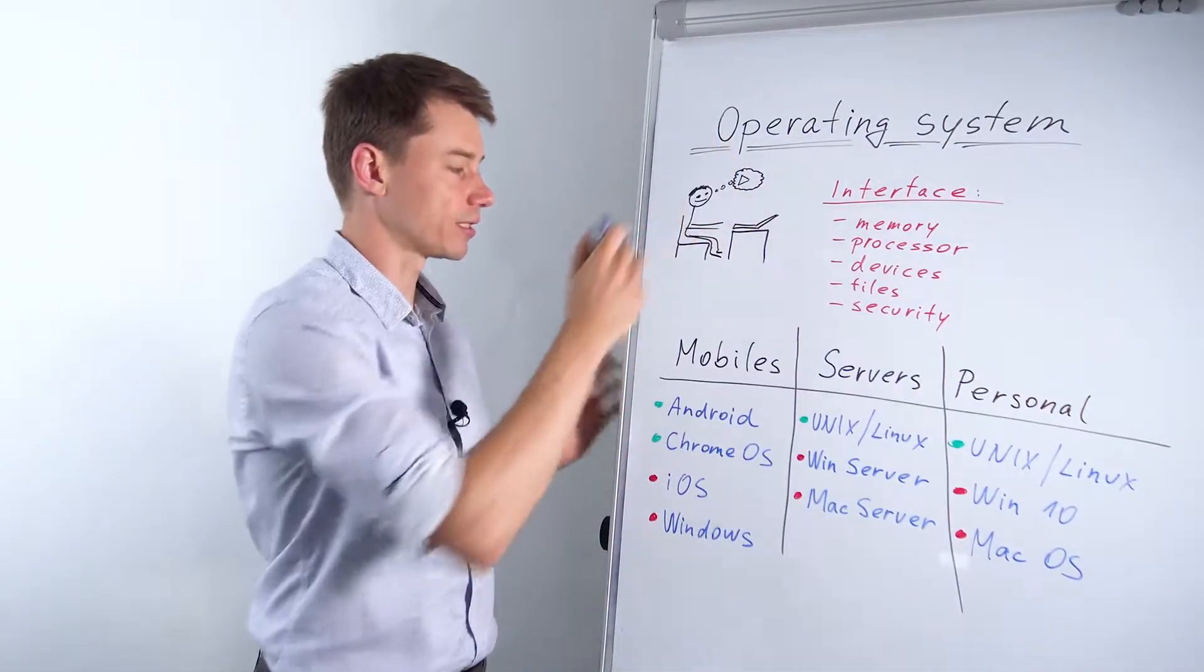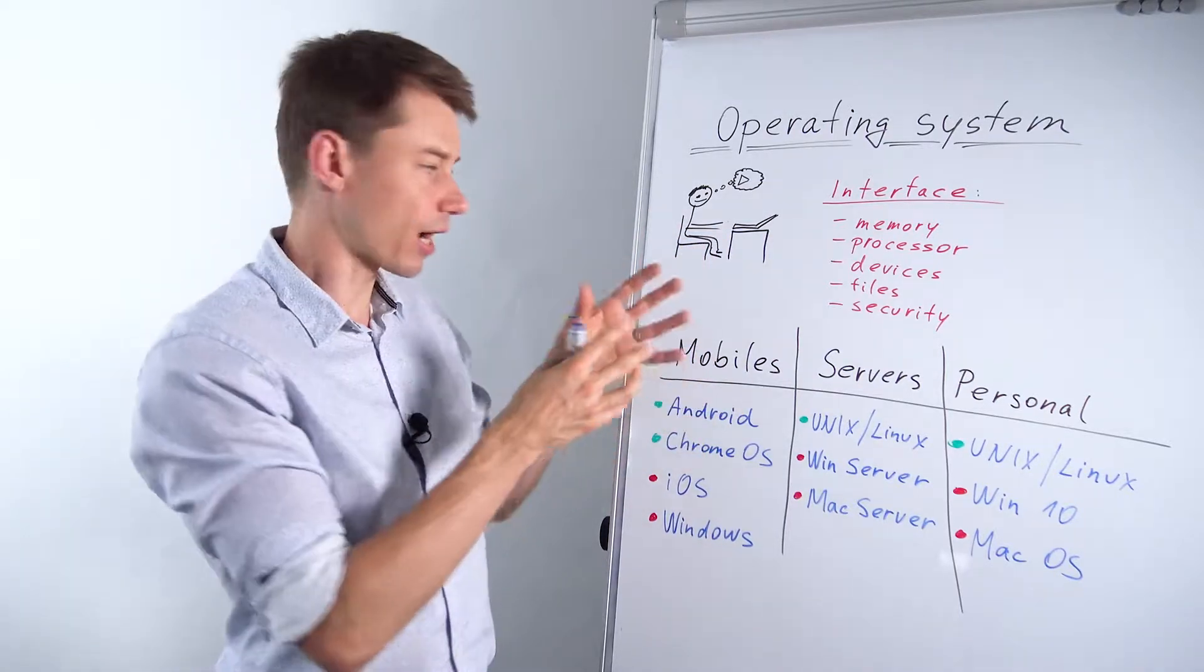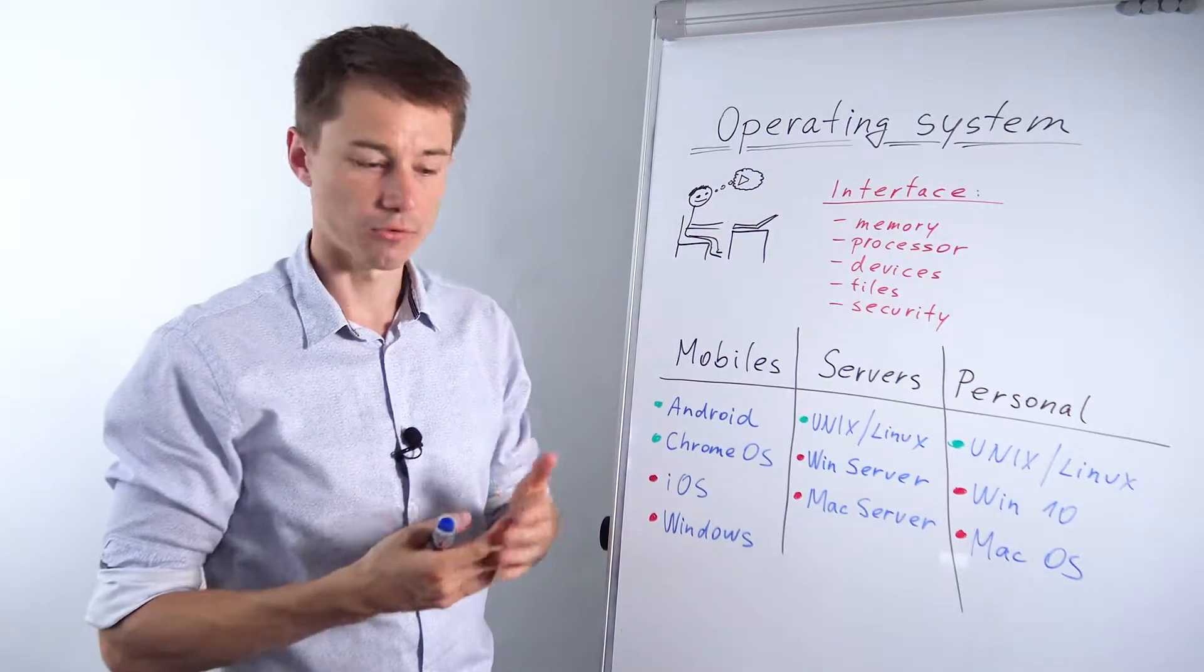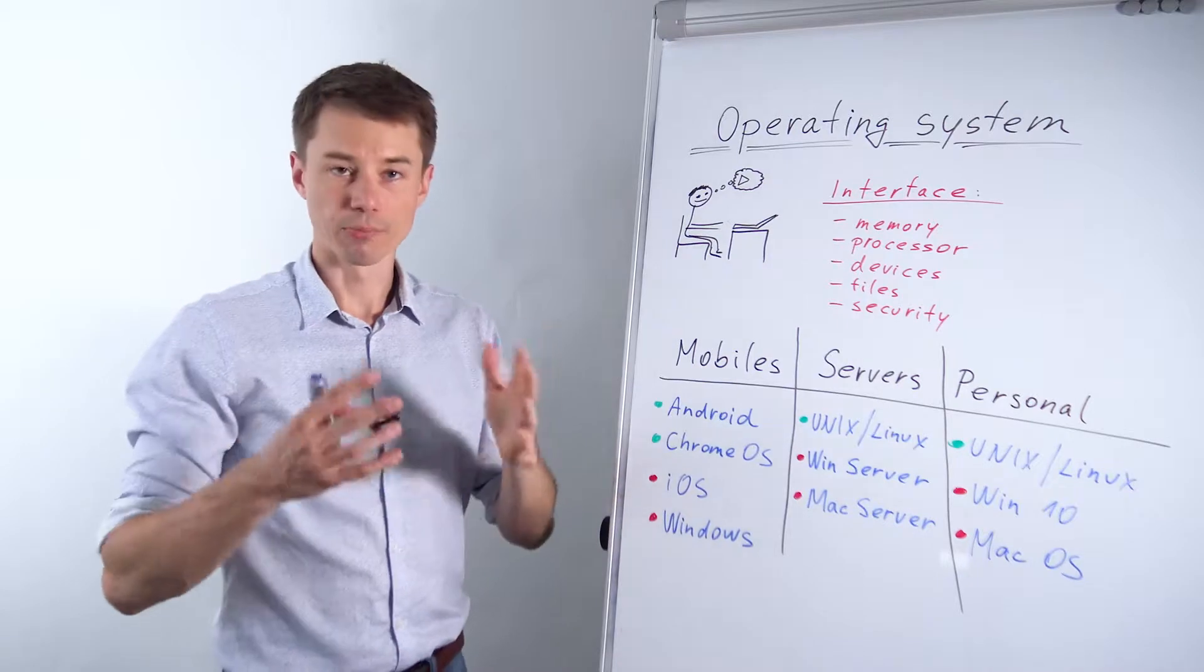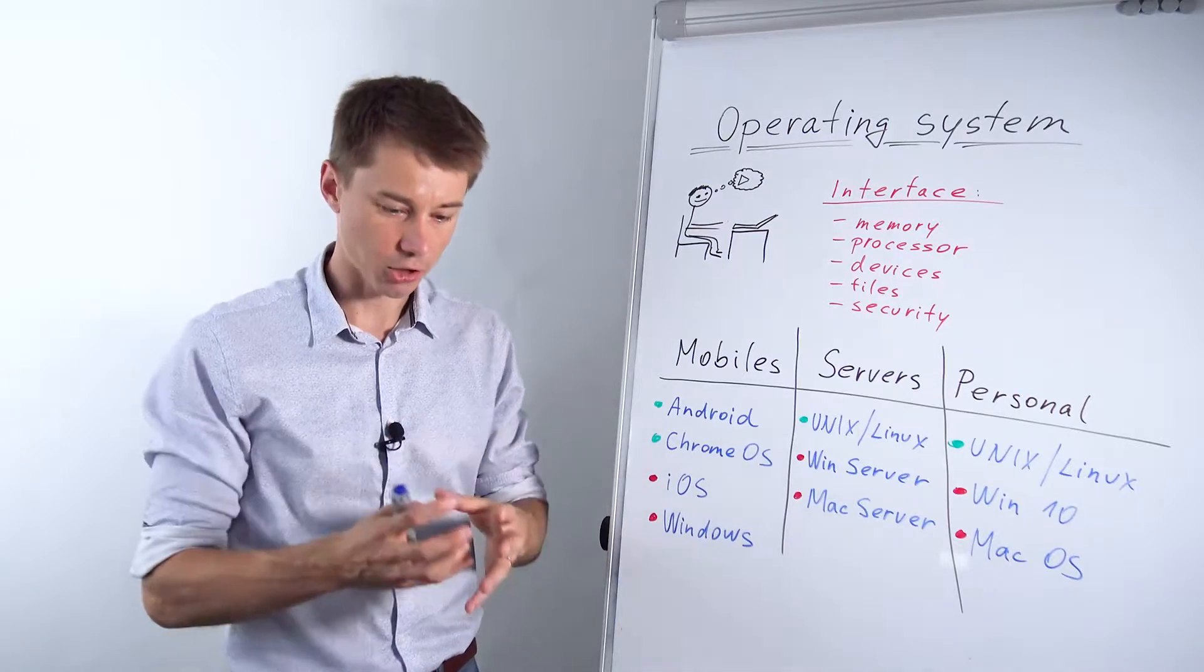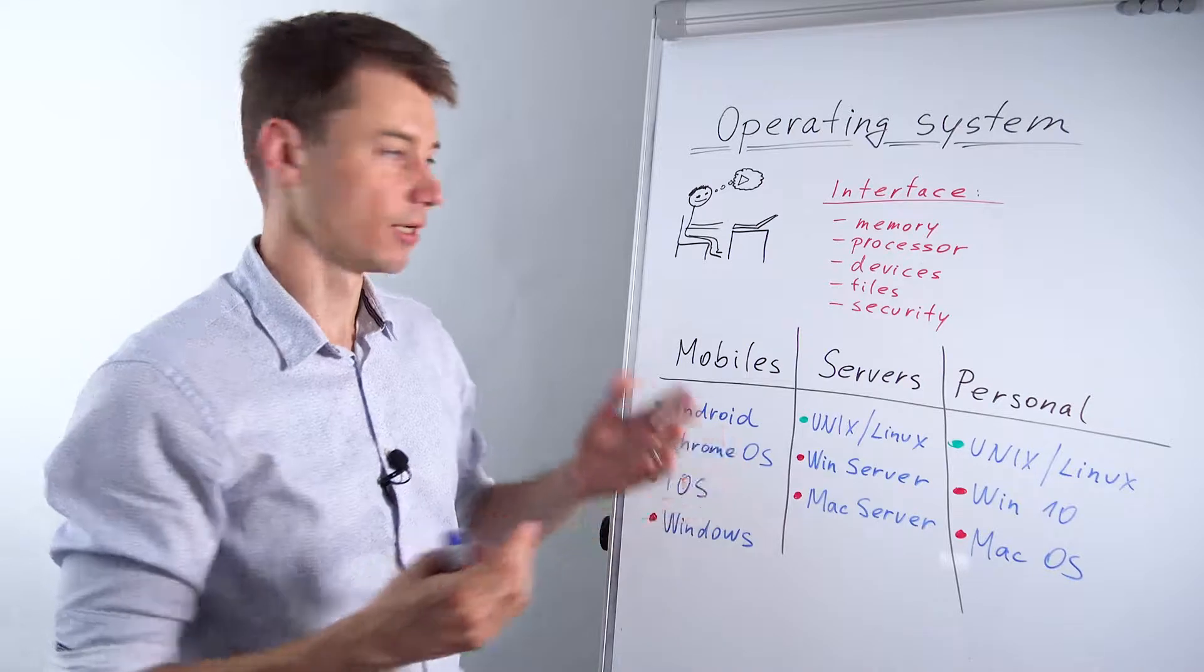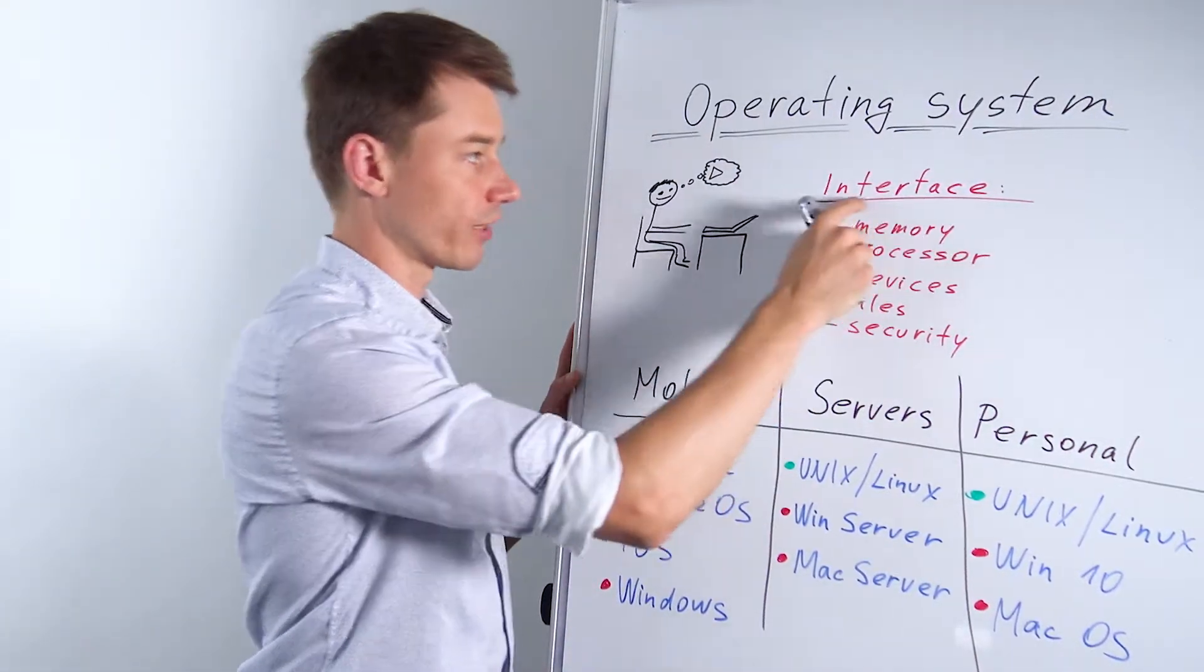Well he needs an operating system because otherwise he couldn't really use the hardware on his laptop or smartphone. The hardware such as CPU or processor or memory or keyboard, this is hardware, this is the iron.